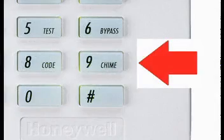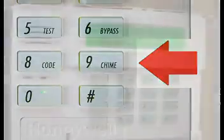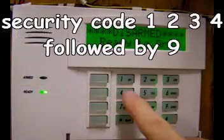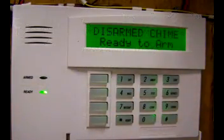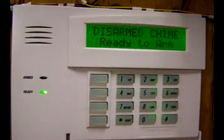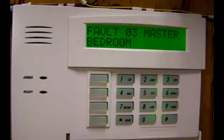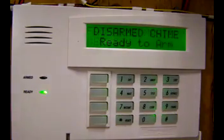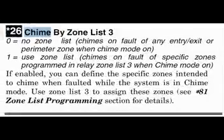Next, we'll talk about chime lists. Many of you have probably already discovered this really cool button called chime. You turn it on by entering your security code, then press the 9 button. Now, anytime a zone is faulted, your alarm will chime — you can hear anytime a door or window is opened. After I had it on for one week, I turned it off. You'd be surprised how many times you open doors and windows. It gets old real fast. To fix this, you use command number 26, chime by zone list.